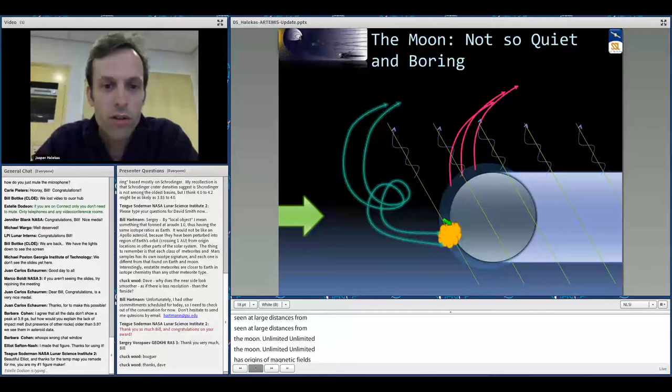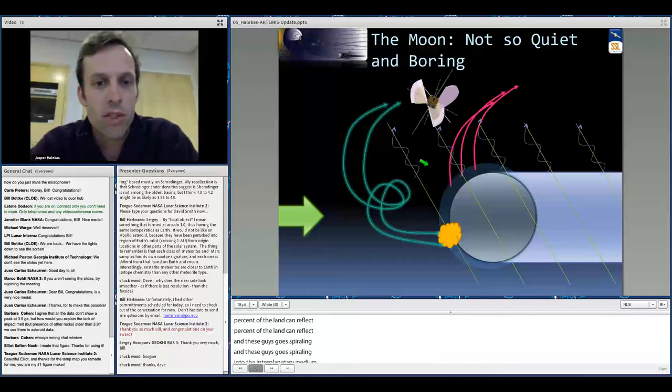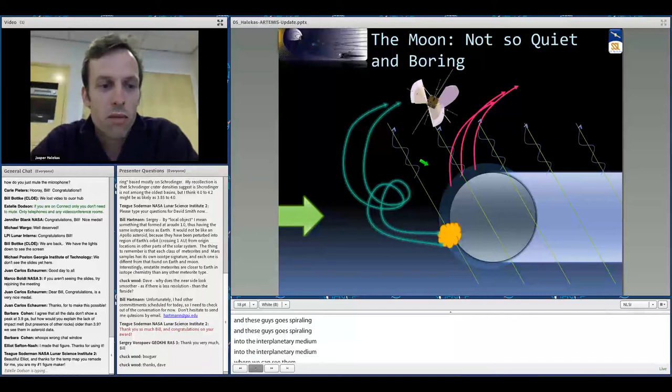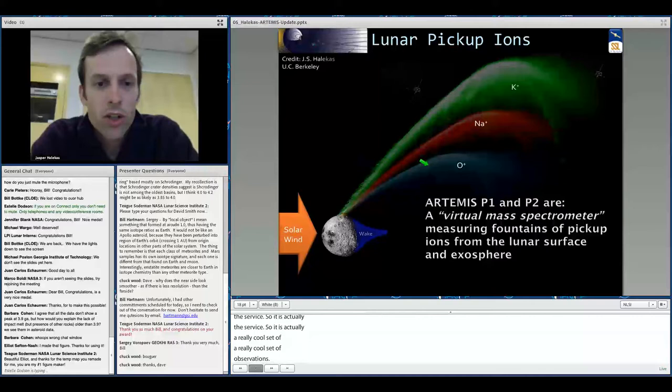Finally, we know that the moon has small regions of crustal magnetic fields, and what we've recently learned is that incoming plasma ions reflect very well from these magnetic fields. Up to 50 percent of the solar wind can reflect, and these guys go spiraling off into the interplanetary medium where we can see them with Artemis. And now here we're out here with Artemis at sometimes tens of thousands of kilometers from the moon, but we can measure the influence of the moon, and we can trace these effects back in some cases to meters from the surface. So it's actually a really cool set of observations.